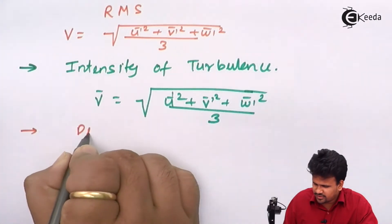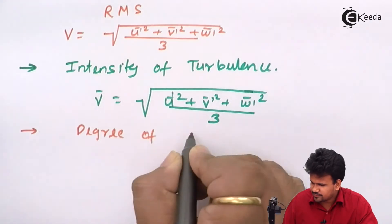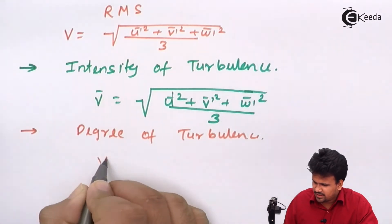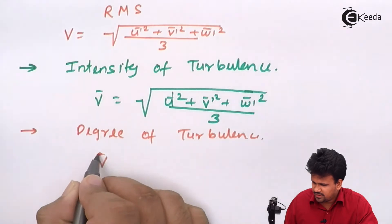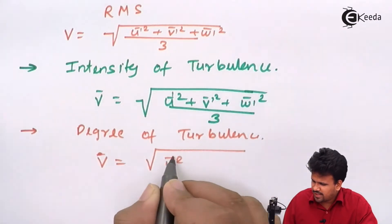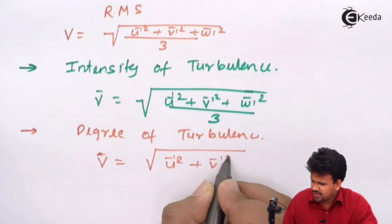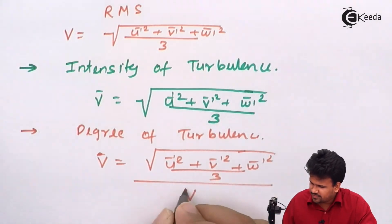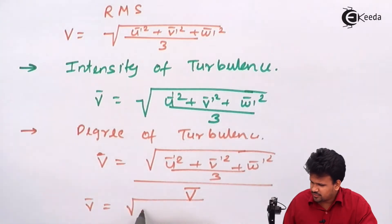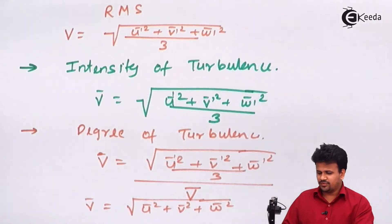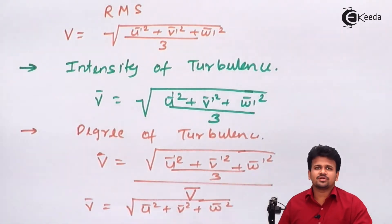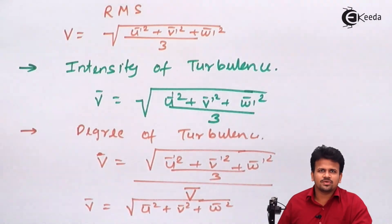Next is the degree of turbulence, defined as the ratio of the RMS velocity to the average velocity of the fluid: (v-dash / V) = √( (u-dash² + v-dash² + w-dash²) / 3 ) divided by V-bar, where V-bar = √(u-bar² + v-bar² + w-bar²). This is the degree of turbulence.